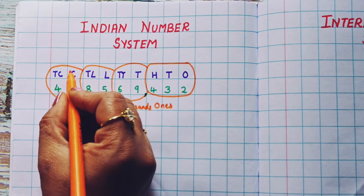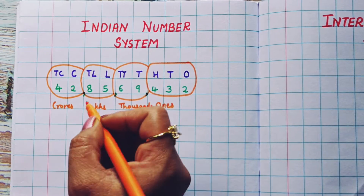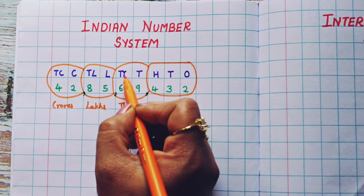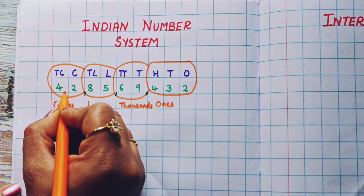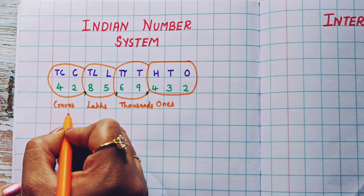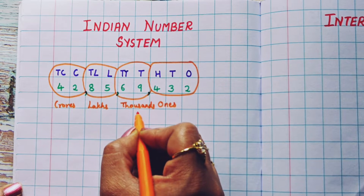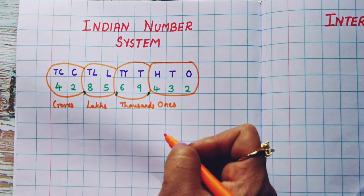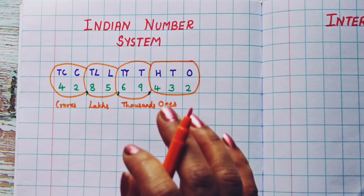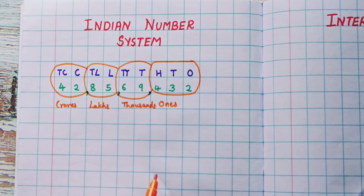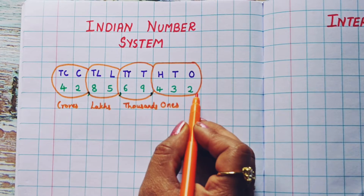Now, how are we going to read this number? The numbers which are present in one group are read together. So we are going to read it as: 42 crores, 85 lakhs, 69,432.